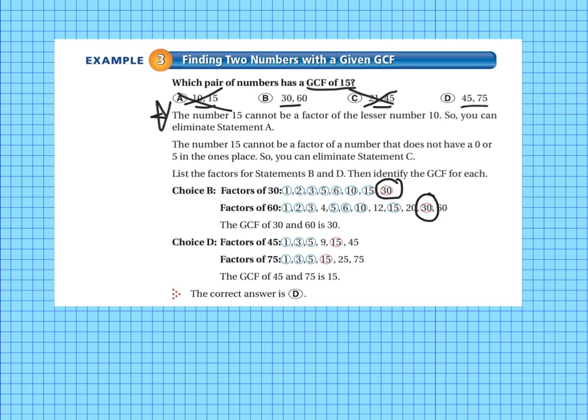So choice D, 45 and 75, our common factors are 1, 3, 5, and our greatest common factor is 15. So the greatest common factor of 45 and 75 is 15. So our correct answer is D.